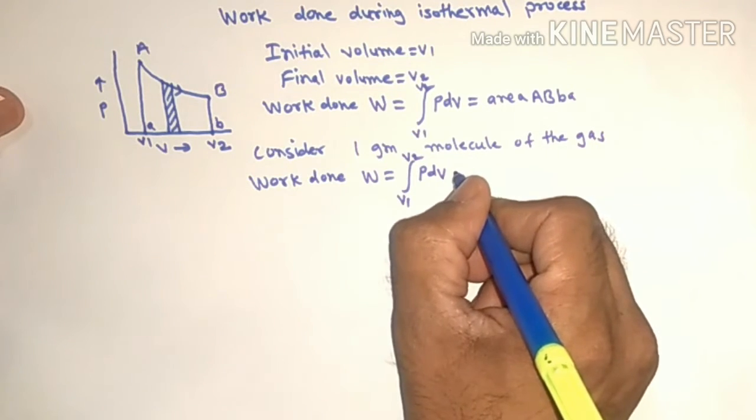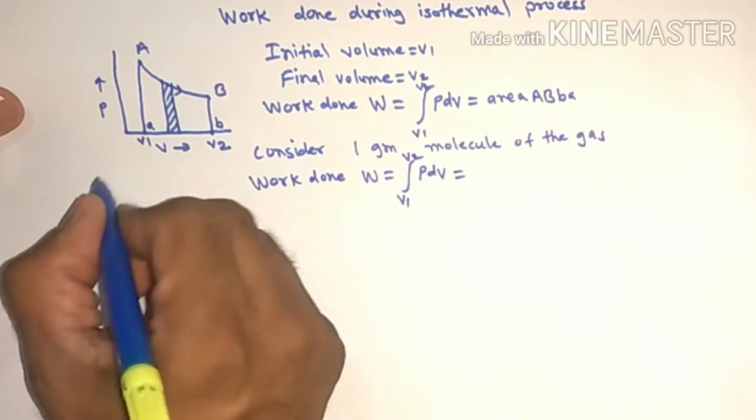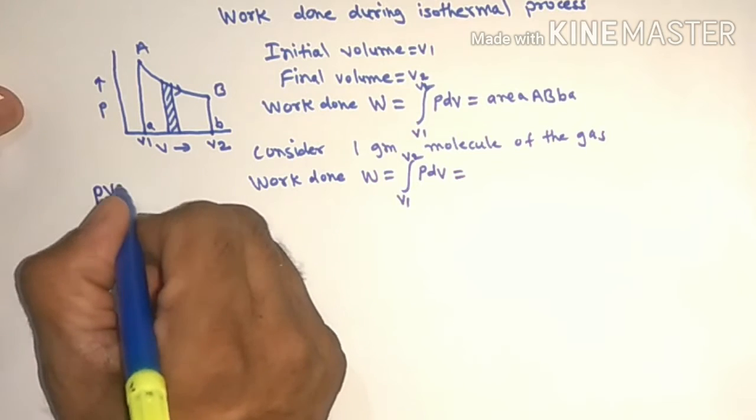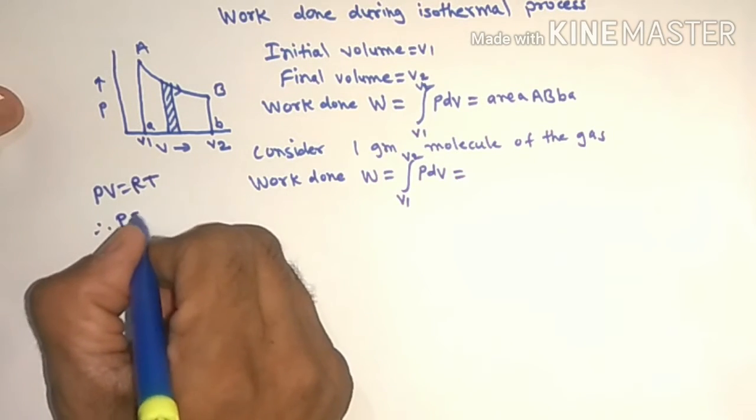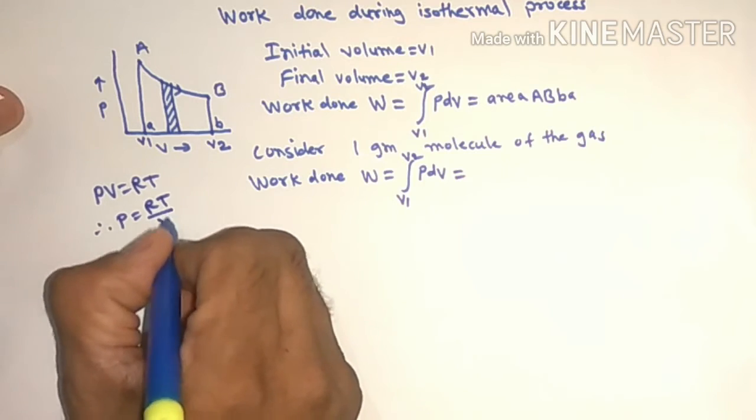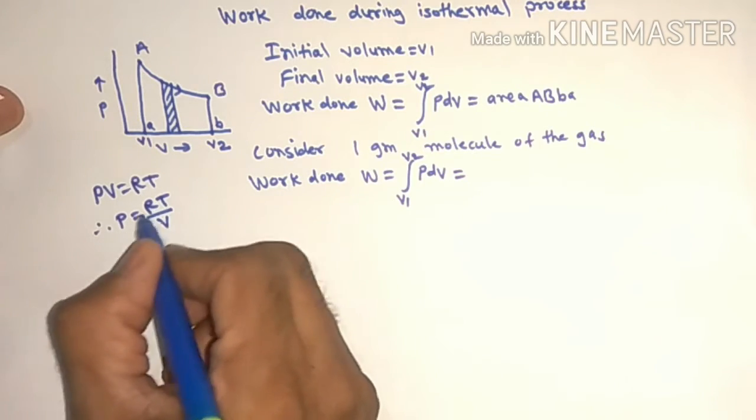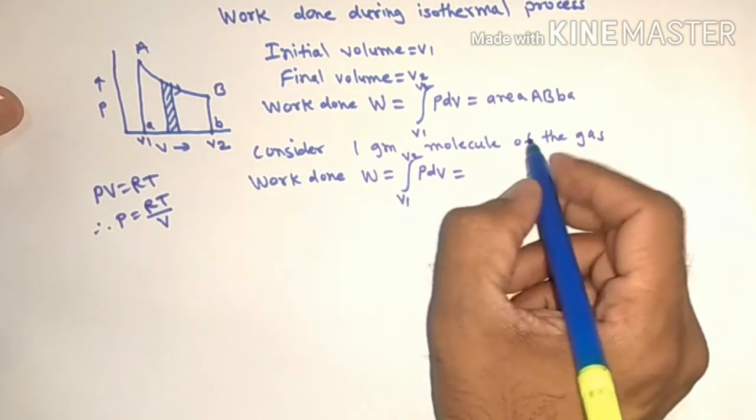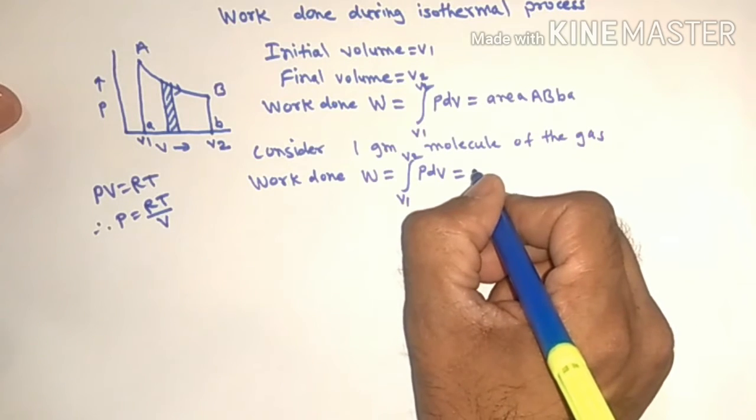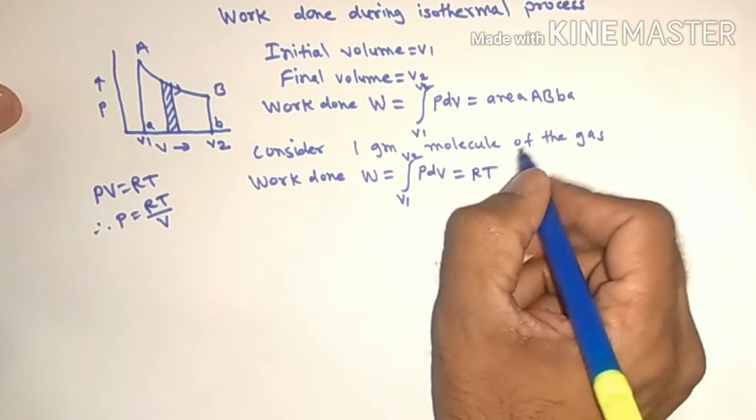First let us write PV equals RT, so from this P equals RT upon V. Use this value of P in this equation. Now take RT outside integration.